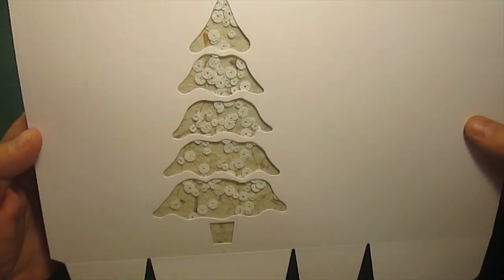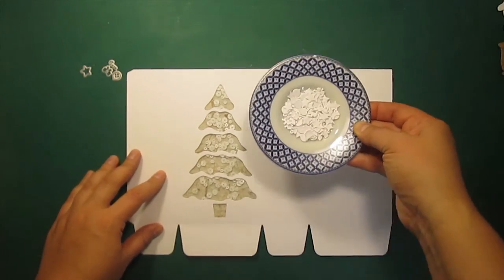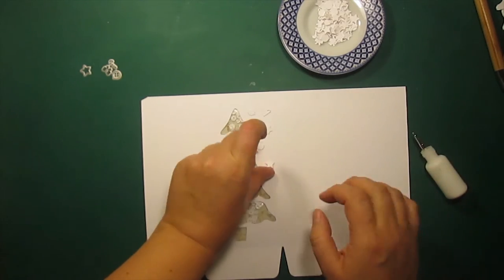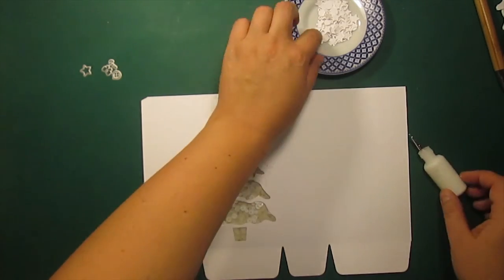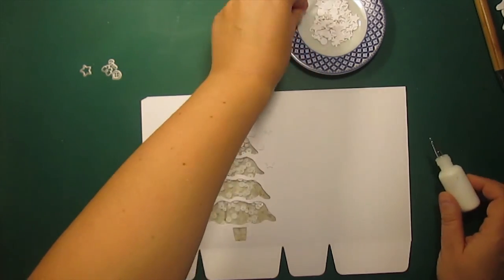I've also die cut a bunch of those small embellishments and I'll use them to create a textured background on the front of my bag. I'm gluing them down to the front randomly. It's as simple as that.